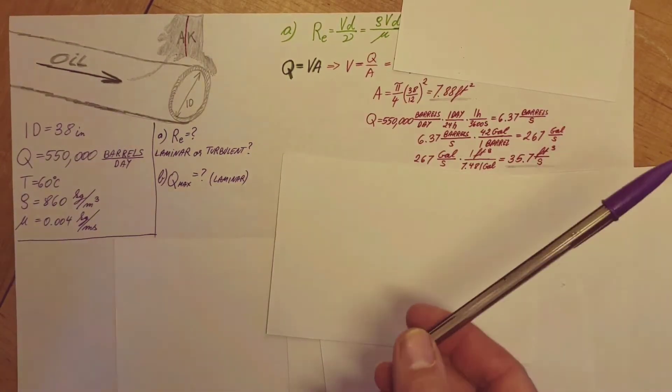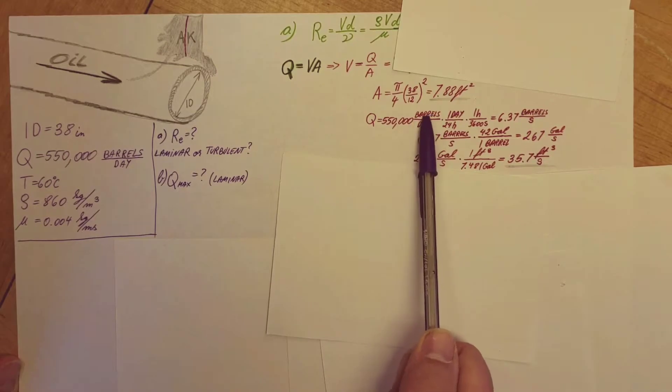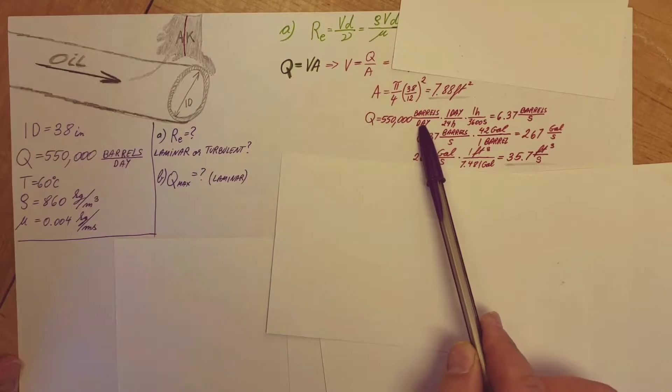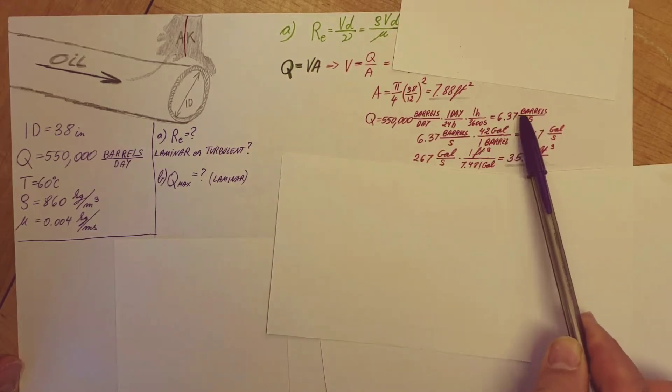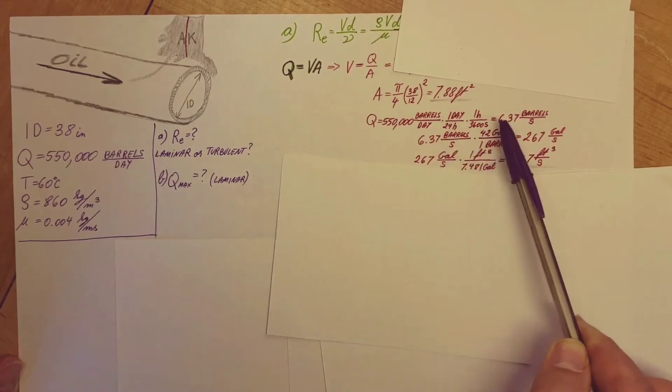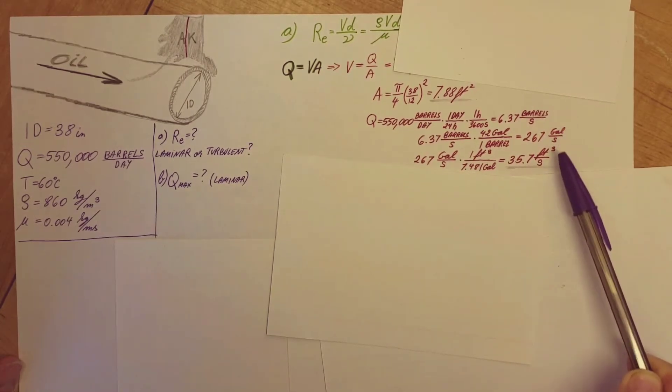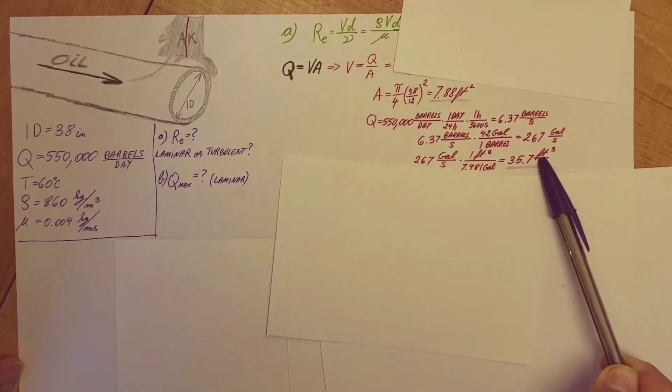Q for us is given, it's just in strange units, so we're going to have to convert it into something we can work more easily with. Barrels per day, I'm going to convert the time part first, from day to hours to seconds, and we get 6.37 barrels per second. Then I'm going to convert the barrels to gallons, gallons per second, and gallons we can convert to cubic feet. From there, we arrive at 35.7 cubic feet per second.